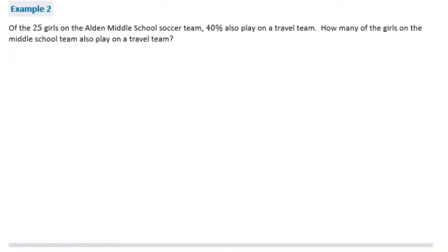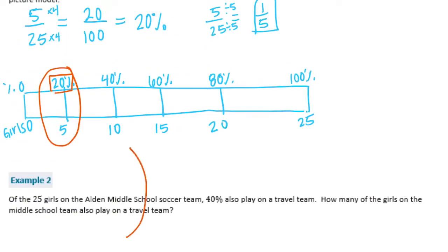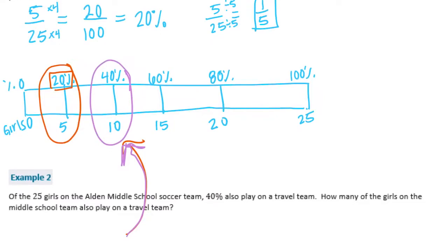Example 2. Of the 25 girls on the Alden Middle School soccer team, 40% also play on a travel team. How many of the girls on the middle school team also play on a travel team? So I would just look above, because we've already drawn that, and so we can see, I'll use a different color since it's a different problem. So I'm going to look up here, and 10 girls would be equal to 40%. So we were looking for 40%, which was 10 girls.